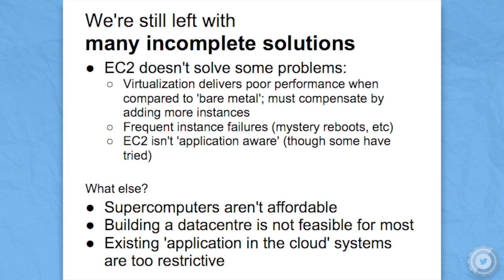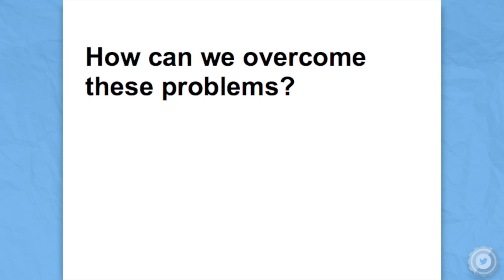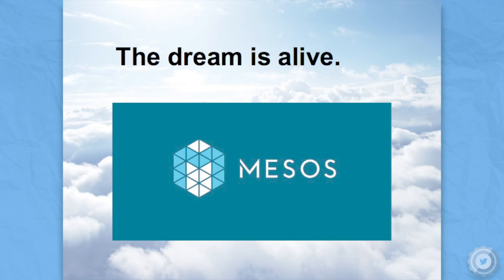So we've got Hadoop and we've got EC2 or some other data center, but there's still some glue missing. We have applications that we want to run, like Hadoop or Jenkins, and something like EC2 isn't really application aware. Some people have tried to solve this problem — like Heroku, for example — but it's only good for people who want to do a very limited set of things. Super computers still aren't affordable and building your own data center is not feasible for most. How do we find a middle ground between our hardware infrastructure and the application layer? I come to you with an answer tonight.